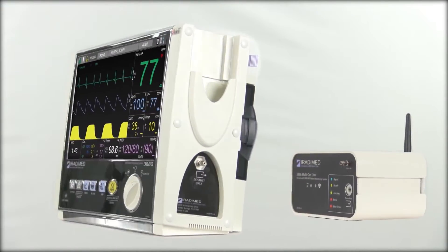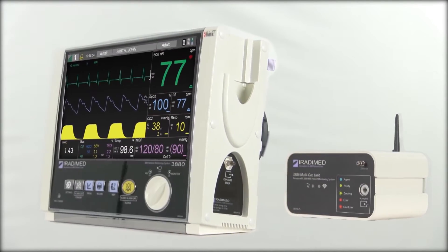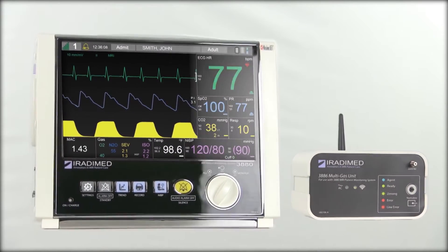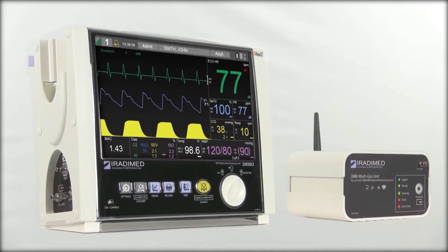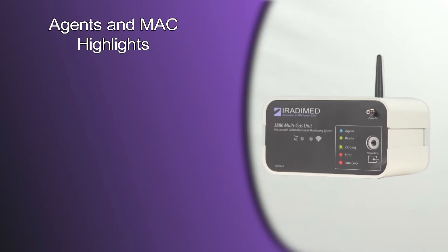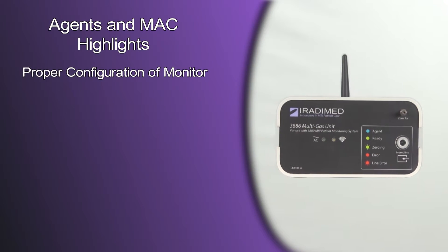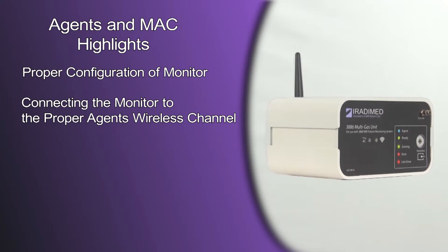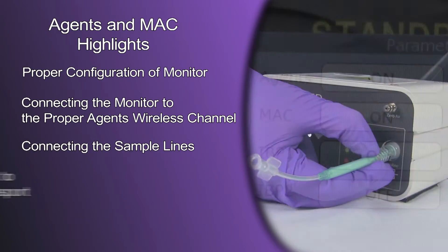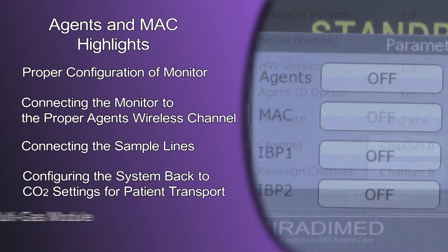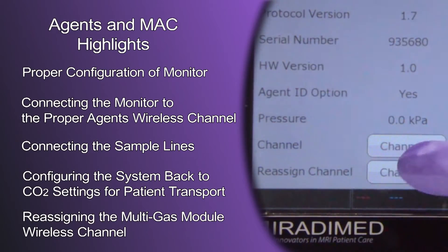Today we are going to review the essential steps for the preparation and application of the wireless 3886 multi-gas module for the 3880 MRI patient monitor system. We will focus on proper configuration of the monitor, configuring the monitor to the proper agent's wireless channel, connecting the sample lines, configuring the system back to CO2 settings for patient transport, and finally reassigning the multi-gas module wireless channel.